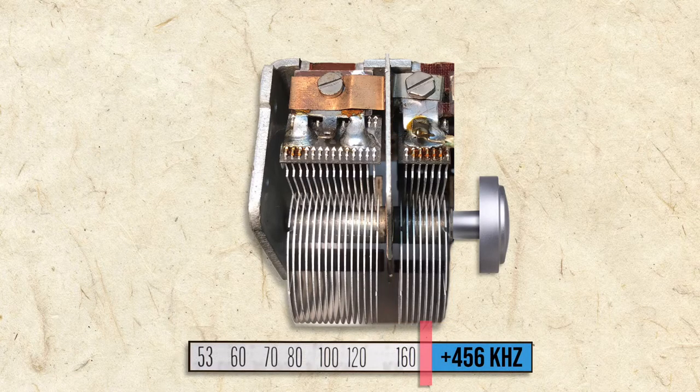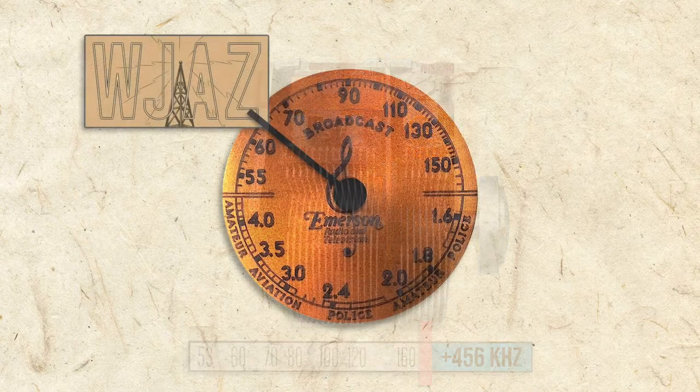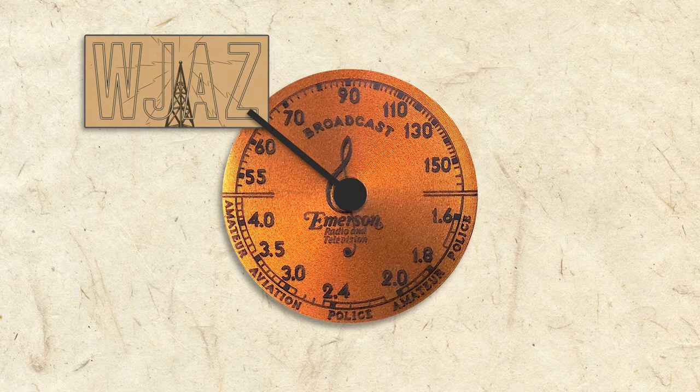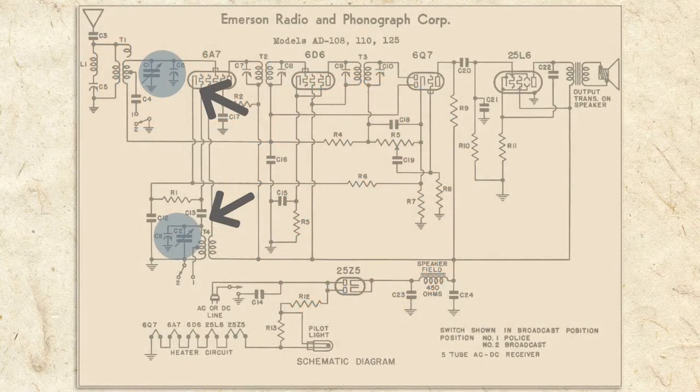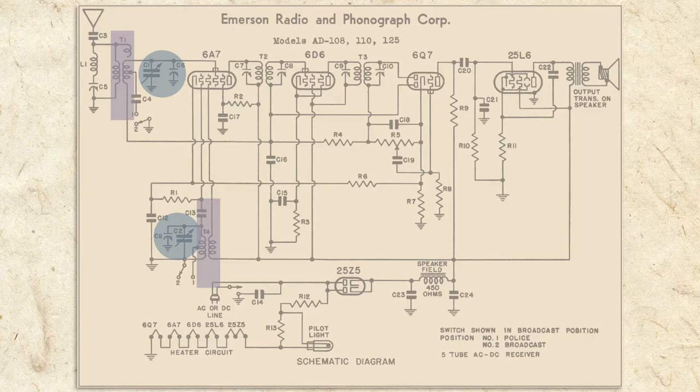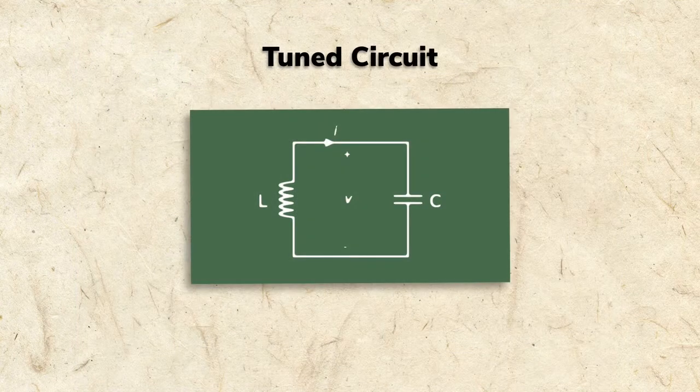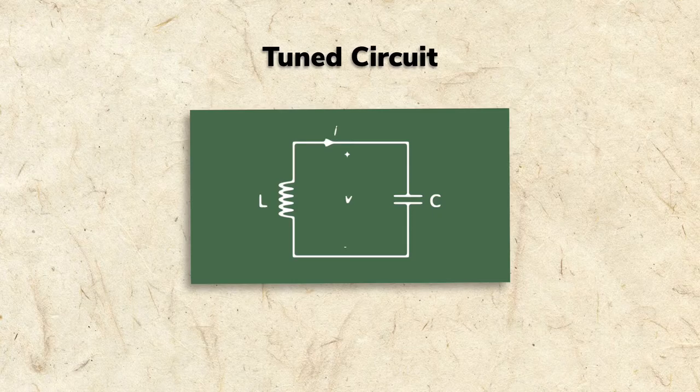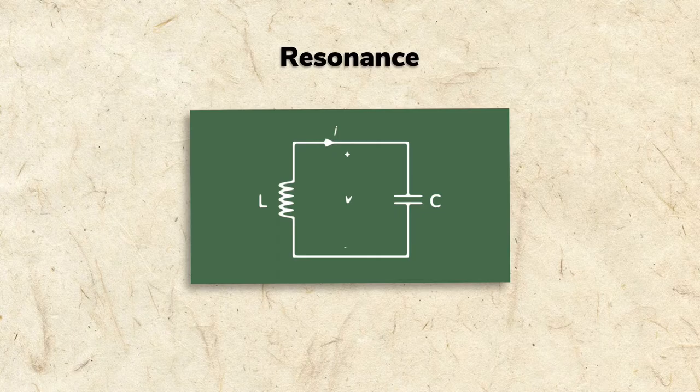The tuning condenser can tune to specific frequencies because its capacitors are arranged in a circuit with the antenna and oscillator coils. And as we learned in previous sections, this arrangement creates a tuned circuit which will resonate at a certain frequency.